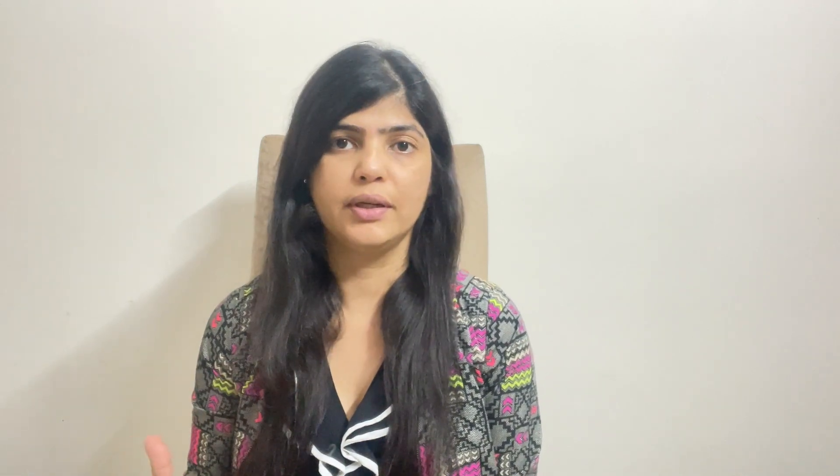Diabetes is a condition which affects how your body turns food into energy. When you eat, your body breaks food into glucose and sends it to the blood. Insulin then helps move the glucose from the blood into your cells, where it is used as fuel for energy right away or stored for later use.